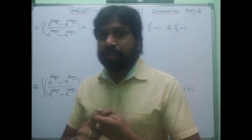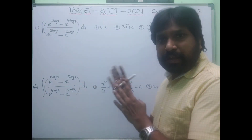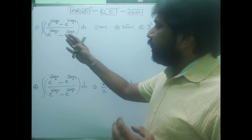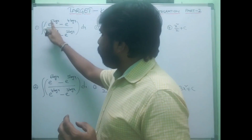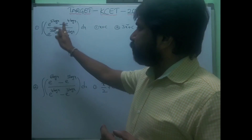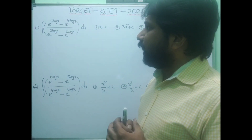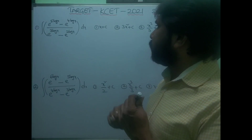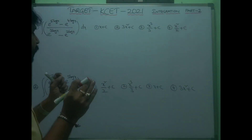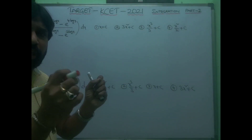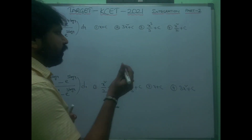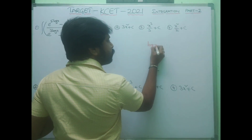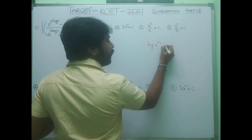This is a model which is very easy and frequently asked in the examination: integral of (e^(5 log x) − e^(4 log x)) / (e^(3 log x) − e^(2 log x)) dx. This depends on small logarithmic concepts.